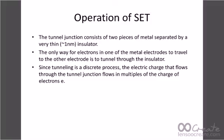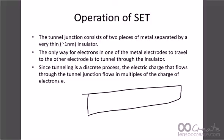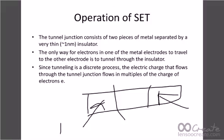The tunnel junction consists of two metal pieces separated by a very thin insulator, forming the tunnel junction between the metal electrodes.